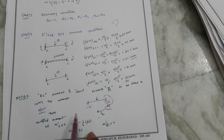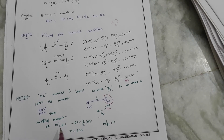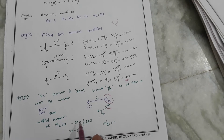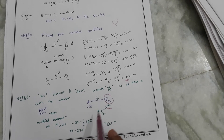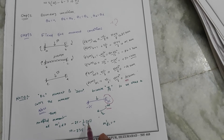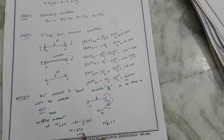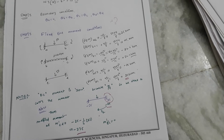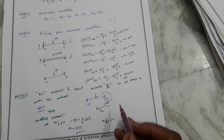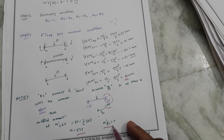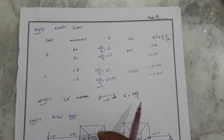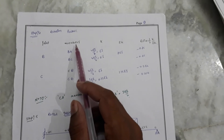The modified moment for M_CD already has minus 25, and minus half of minus 25, giving us minus 37.5. So the modified moment for M_CD is minus 37.5, and the modified moment for M_DC is zero.